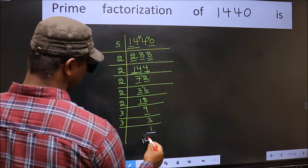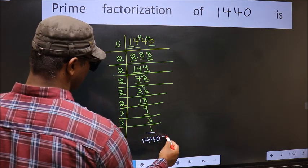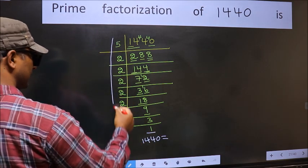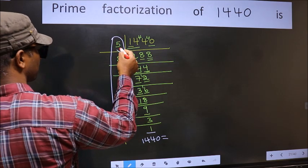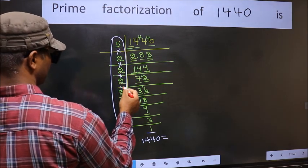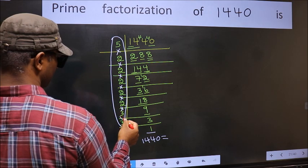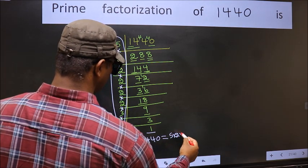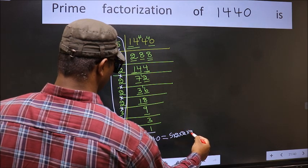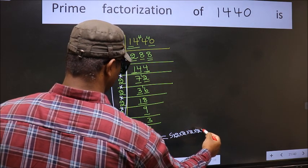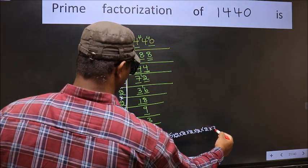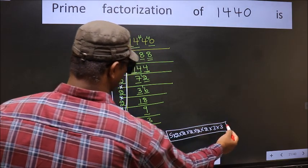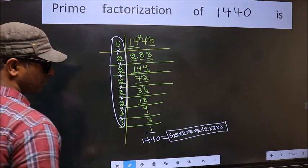So the prime factorization of 1440 is the product of these numbers: that is 5 × 2 × 2 × 2 × 2 × 2 × 2 × 2 × 3 × 3. This is the prime factorization of 1440.